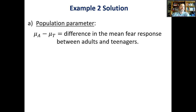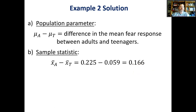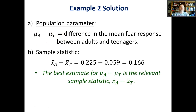The corresponding sample statistic for mu_1 minus mu_2 is x-bar_1 minus x-bar_2 — in this case x-bar_A minus x-bar_T. Plug the numbers in and compute the difference: 0.225 minus 0.059 equals 0.166. This number gives the researchers a good estimate of the actual difference in the population. The best estimate for the parameter is the relevant sample statistic, x-bar_A minus x-bar_T.